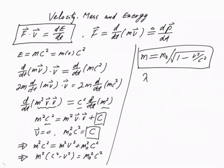If we define this number lambda equal to one over square root of 1 minus V square over C square, then we can write M equals lambda M zero.